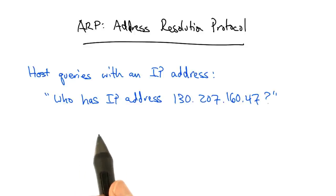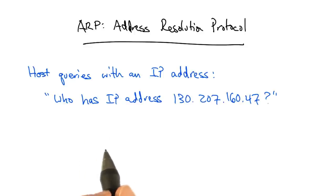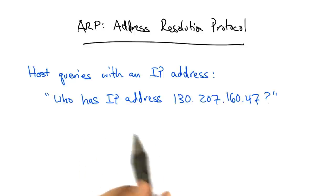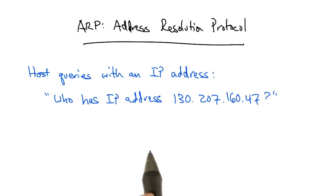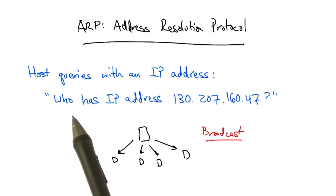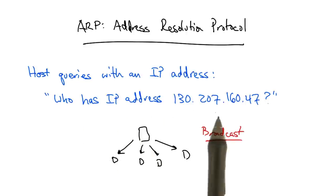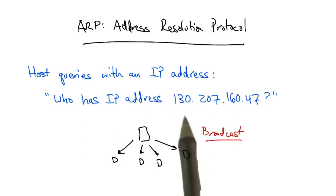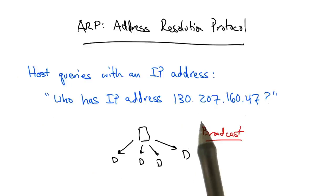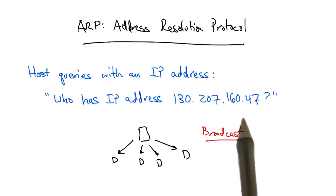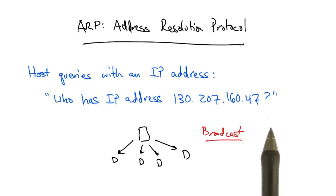In ARP, a host queries with an IP address, broadcasting that query to every other node on the network. That query will be of the form: who has a particular IP address, such as 130.207.160.47.